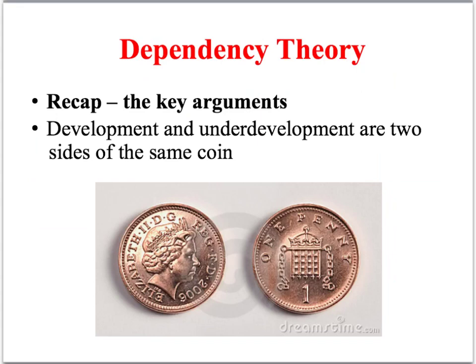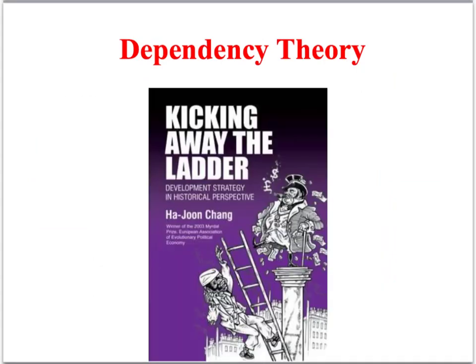In summary, unlike modernisation theory and neoliberalism, dependency theory focuses on the external causes of underdevelopment. In a nutshell, this perspective argues that development and underdevelopment are two sides of the same coin — rich countries have become wealthy on the backs of the poor. In effect, the developed countries of the north have made the poorer countries poor, and it is in their interest to keep them poor by, using Ha-Joon Chang's metaphor, kicking the development ladder away. If these countries remain poor and weak, the richer countries can continue to steal their natural wealth and exploit their workers.